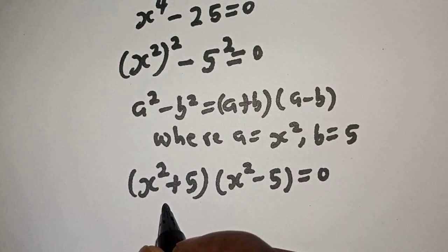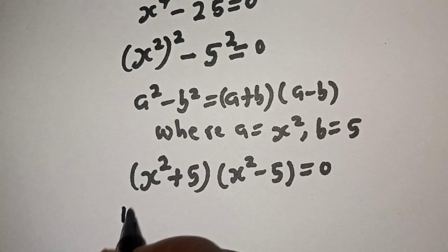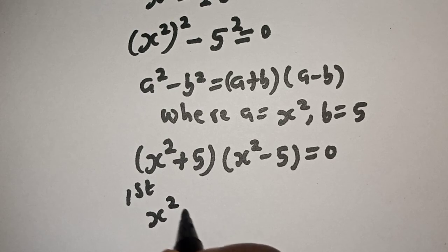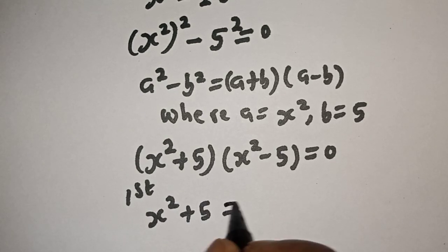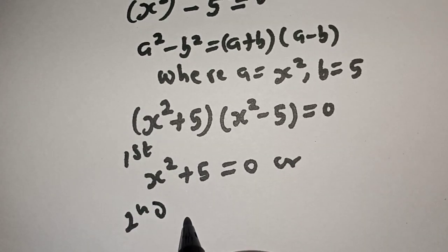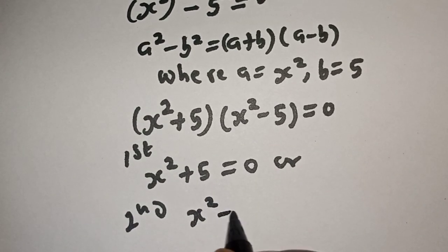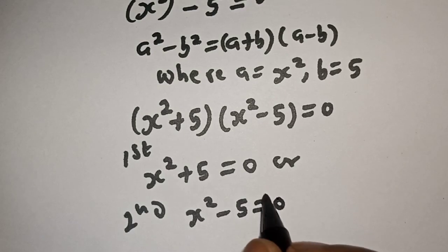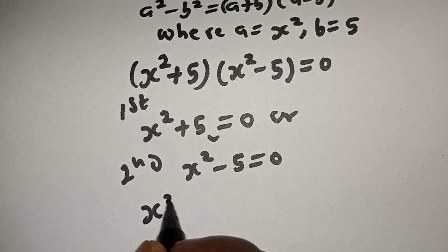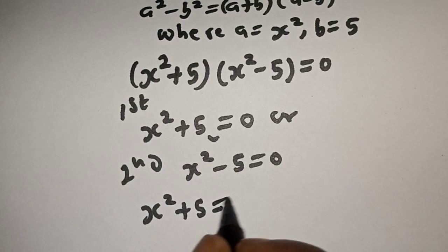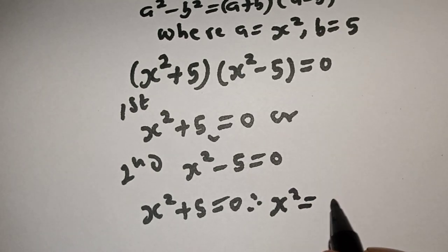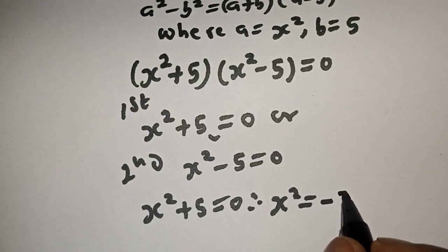So there are two cases here. The first case is s square plus 5 is equal to 0. The second case is s square minus 5 is equal to 0. From the first case, s square is equal to negative 5.